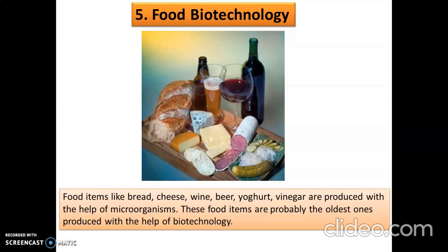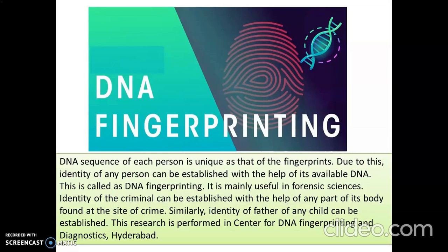Lastly, we have food biotechnology — food items like bread, cheese, and wine can all be made with the help of microorganisms. Then we have DNA fingerprinting. The DNA sequence of each person is unique, and DNA fingerprinting is used in forensic science to identify criminals or any body part found at a crime scene. Similarly, the identity of a father or any child can be established. These are all the applications of biotechnology — it is a boon for us if we use it in the right way. Thank you.